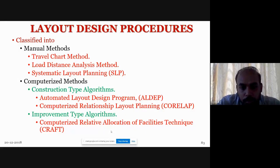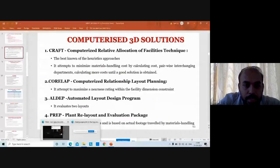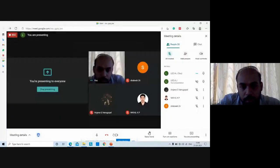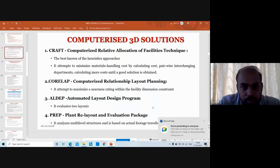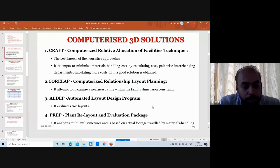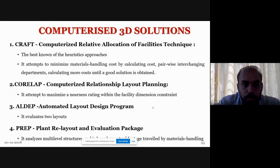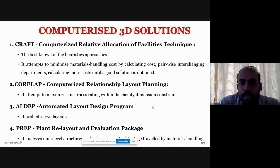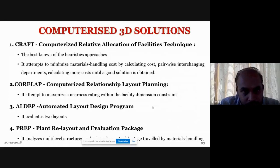Next we move into the next topic: computerized relative allocation of facilities technique, that is CRAFT. CRAFT is the best known heuristic approach. It attempts to minimize material handling cost by calculating cost, pairwise interchanging departments, and calculating cost until a good solution is reached.